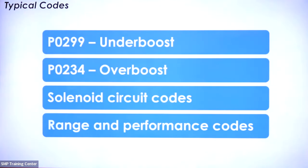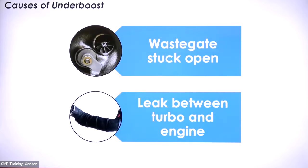Now that we understand the basic turbo, how it works, the wastegate system, and a little bit about VGT turbos, let's talk about some typical things that may come through your shop on a daily basis. Generally speaking, the most common reasons a turbo is either suspected bad or confirmed as a failure come down to either an underboost condition or an overboost condition, with corresponding codes P0299 and P0234, or solenoid circuit codes and range and performance codes.